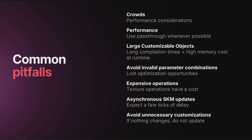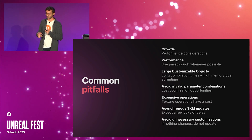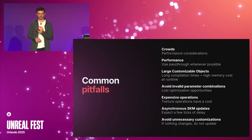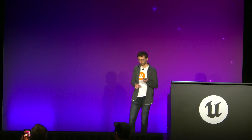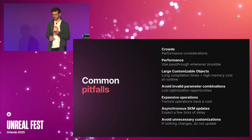Now that we're reaching the end, I want to go over the most common pitfalls. With crowds, take into account the performance — avoid creating expensive customizable objects without having the CPU budget, and consider baking them. Use pass-through whenever possible, especially if you don't need to perform any operations. Keep an eye on large customizable objects — they will have long compilation times and a relatively high runtime memory cost. Design your customizable objects to avoid invalid parameter combinations. Be aware of expensive operations — texture operations have a much larger cost than mesh operations. Updates are asynchronous, so expect a few ticks of delay before getting the generated final skeletal meshes. And finally, avoid unnecessary customizations — if nothing has changed, simply don't request an update.